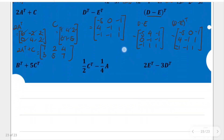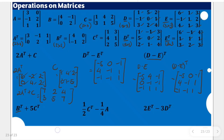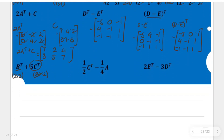Let's proceed to item four: the transpose of B plus 5 times the transpose of C. Let's check whether this is defined. The transpose of B is a 2 by 2 matrix. The transpose of C is a 3 by 2 matrix. Since their sizes are different, the sum is undefined. As I mentioned earlier, we can save time by recognizing this and moving on.